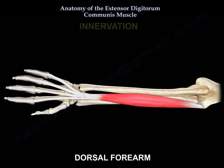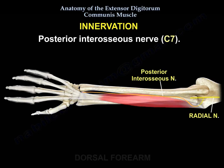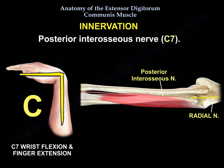Innervation: the posterior interosseous nerve. Extension of the fingers is predominantly the C7 nerve root. C7 gives us wrist flexion and finger extension.